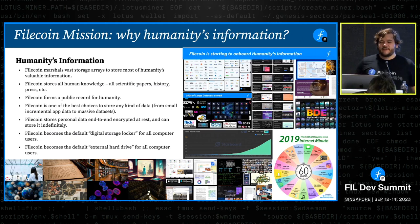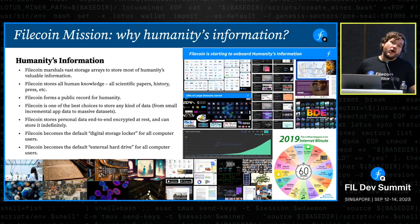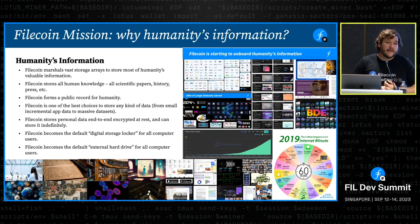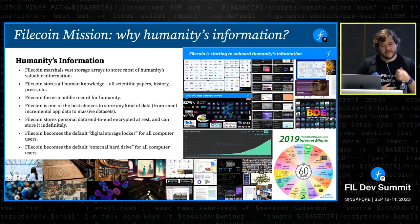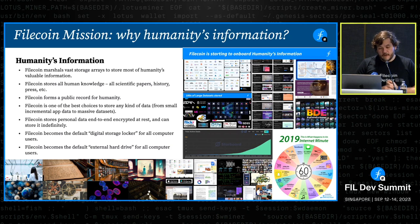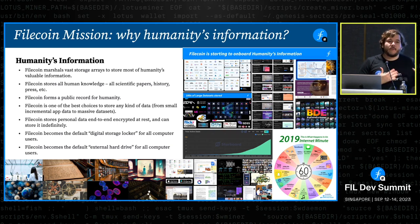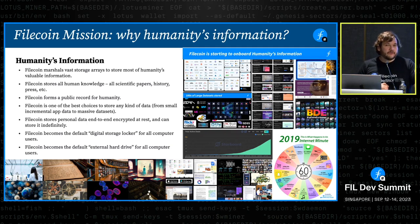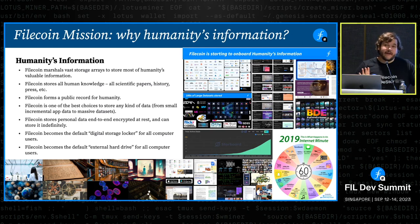What do we mean by humanity's information? This is meant to be all-encompassing — the union of what all of us think is valuable, including all the information we care about as a species. It certainly should include the stuff we all really care about: public knowledge, scientific papers, history, the public record — all of that should be able to be preserved with very high replication factors. We want Filecoin to be good and successful for all kinds of uses, so when a normal developer or user wants to store their data on the internet, Filecoin becomes the first choice. We're very far away from that today, though some on-ramps like Estuary have succeeded in enabling this.